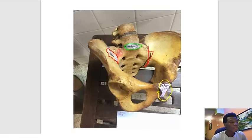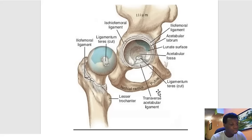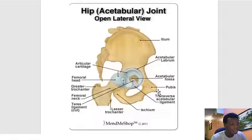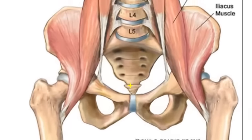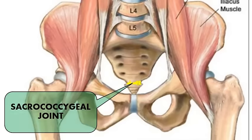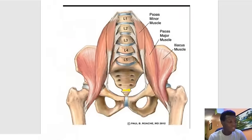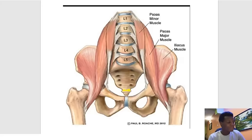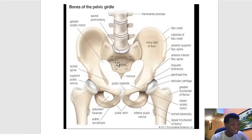There is also the sacrococcygeal joint, which is the joint between the sacrum and the coccyx.